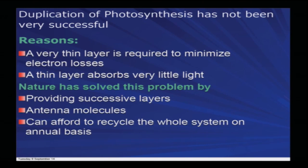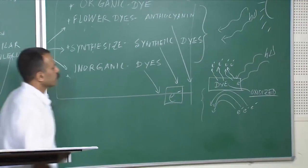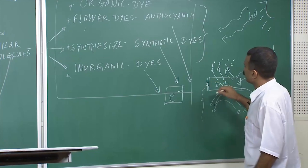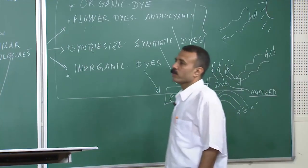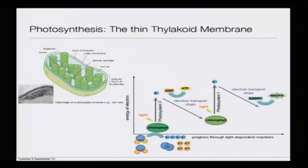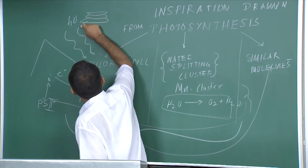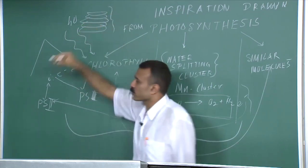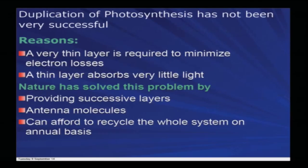Why has the duplication of photosynthesis not been really successful so far? A very thin layer is required to minimize electron loss — the dye layer really has to be as thin as possible; thinner is better, so there will be no further loss of electrons. But a thin layer absorbs very little light. Nature has solved this problem through photosynthesis by stacking the thylakoid membranes — a nanoscopic stacking — and nature can afford to recycle the whole system on an annual basis.